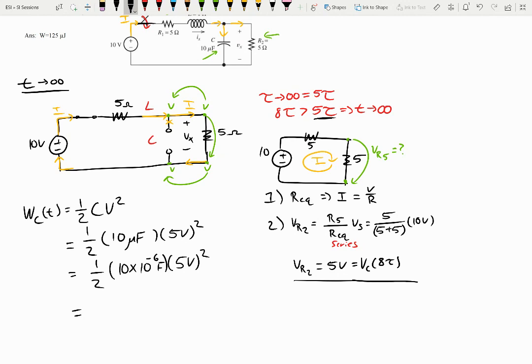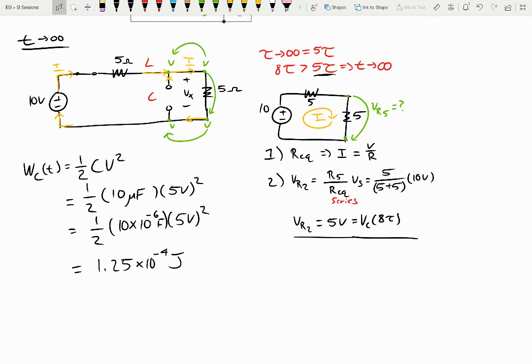So, we can go plug that in. We'll get 1.25 times 10 to the negative 4th joules. And that'll be our amount of energy that we have at that time.